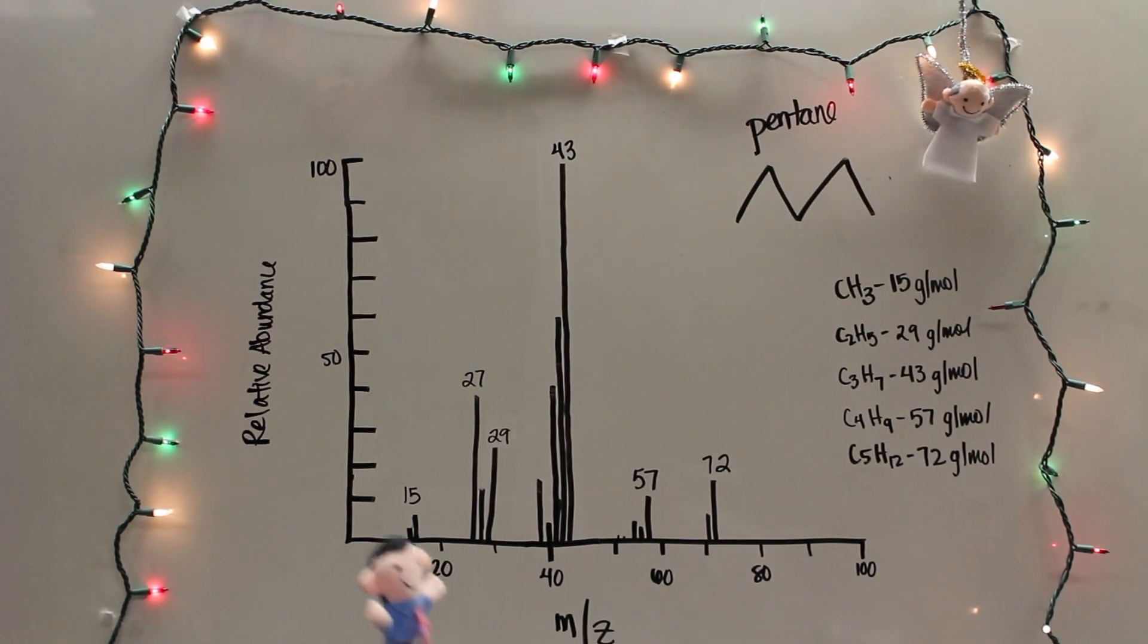Okay, that makes a little more sense. So the x-axis shows the mass-to-charge ratio, and the y-axis shows the relative abundance of the fragment? Exactly.